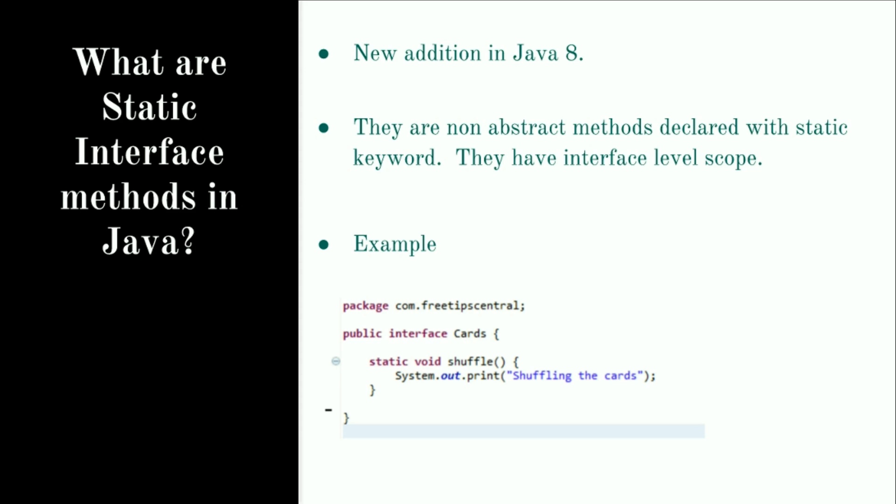Static interface methods are a new addition to Java 8 — before Java 8 there were no static interface methods. From a conceptual angle, they are nothing but regular static methods which you have in classes. The only difference is that now you can have static methods in interfaces. Just like static methods in classes, static interface methods also have interface-level scope, meaning they are not dependent on any instance of the interface.